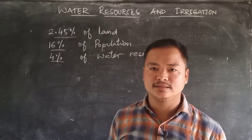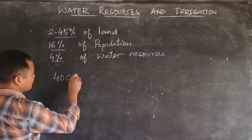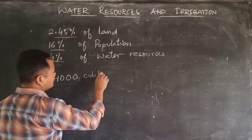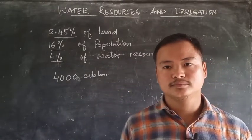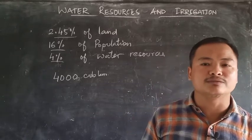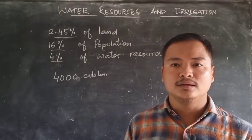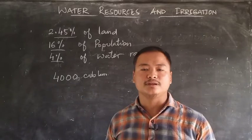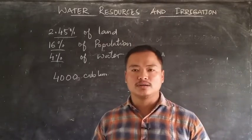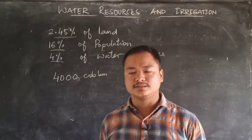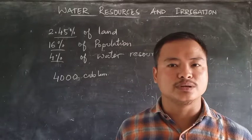In a year, India receives almost 4000 cubic kilometers of rainfall. But only 60 percent of the total water resources available in India is usable or is utilized. So more than half of it goes as waste, either as surface runoff or it is drained into rivers or it simply flows on the surface. So this becomes a major problem because the conservation process is not at its efficiency.